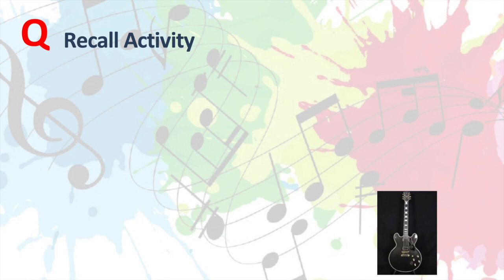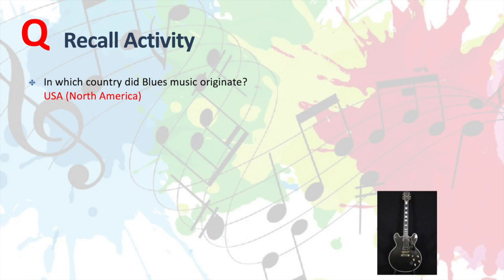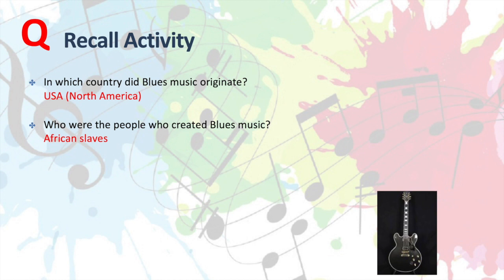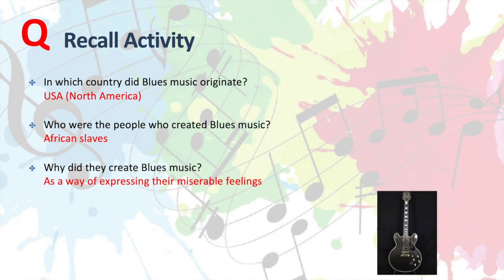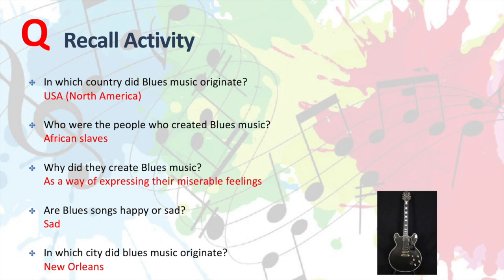Okay, let's have a look at your answers. Question 1: In which country did blues music originate? That is the USA, so North America. Who were the people who created blues music? These were the African slaves who came across on the transatlantic slave trade. Why did they create blues music? As a way of expressing their miserable feelings. Are blues songs happy or sad? They are of course sad. And in which city did blues music originate? That was New Orleans, which is in the southern part of North America.